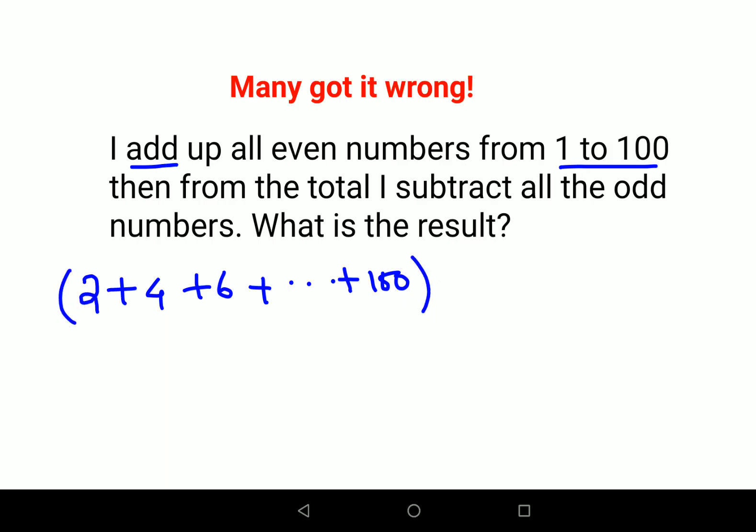And then whatever total I get, I subtract all the odd numbers. So all the odd numbers between 1 to 100 will start from 1 then 3 then 5 and then going on up to 99. So now what will be the result?